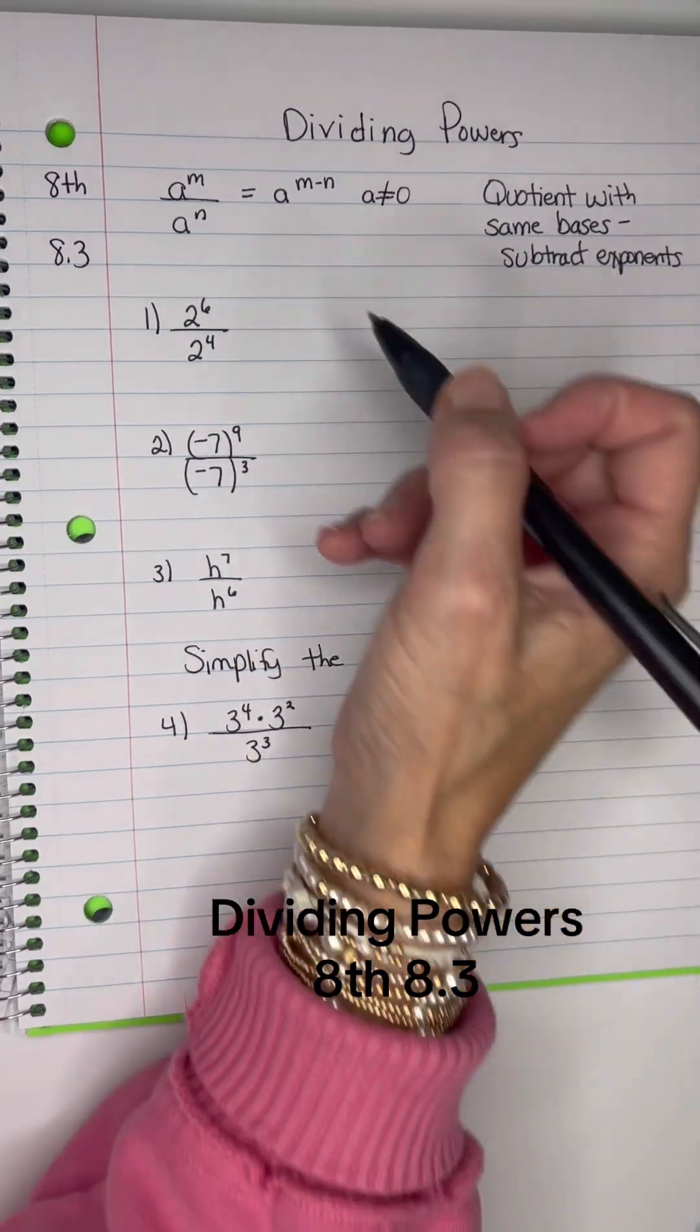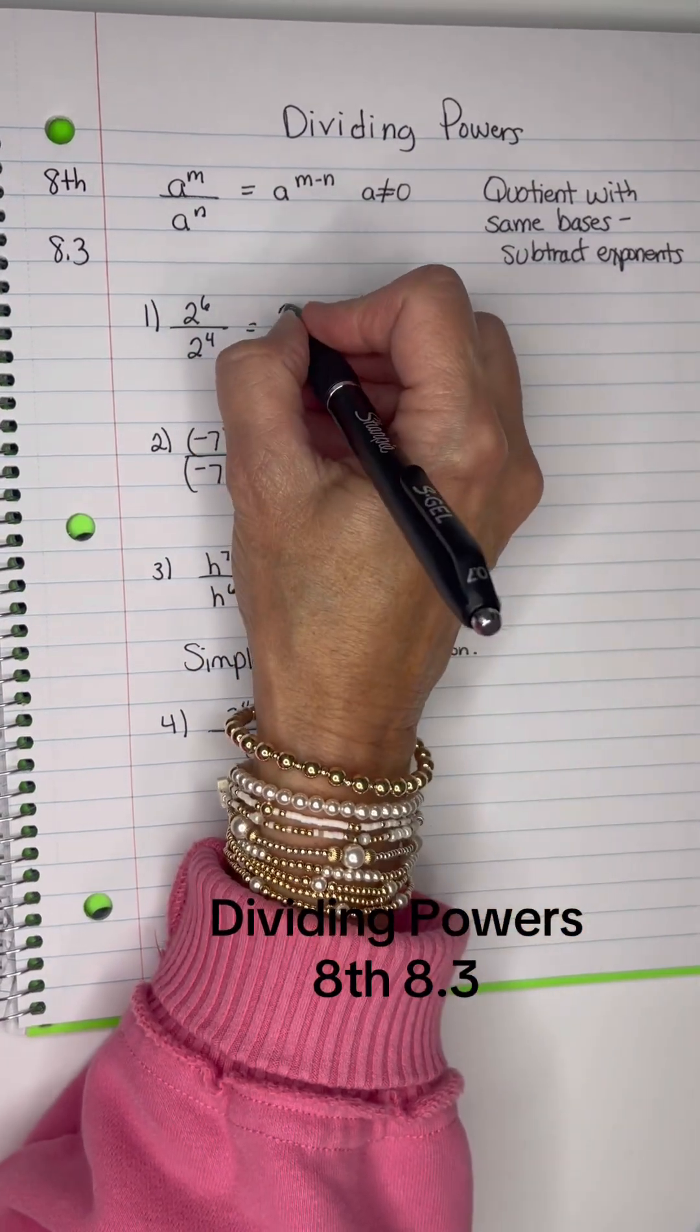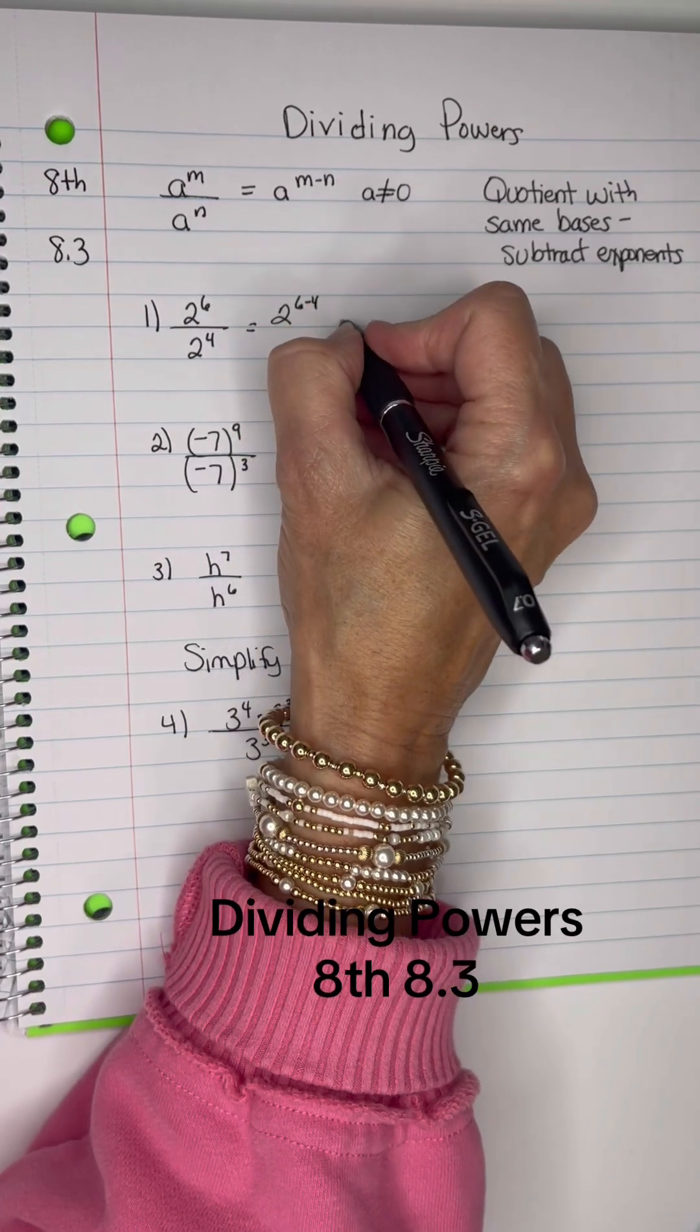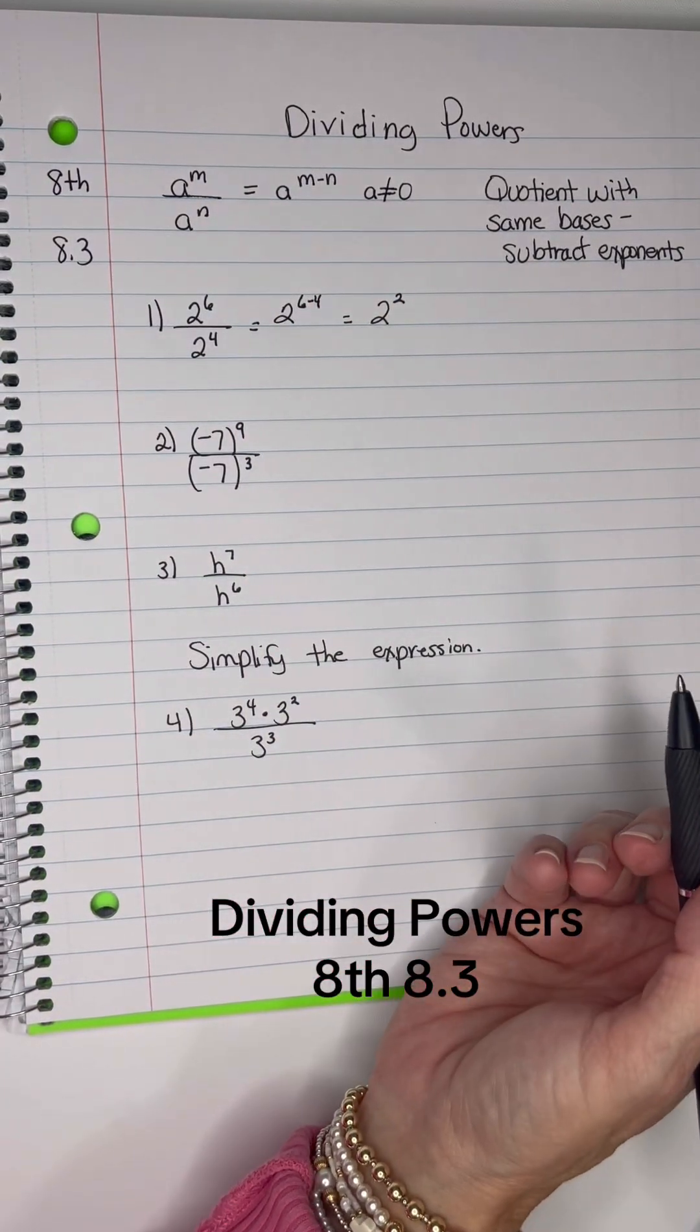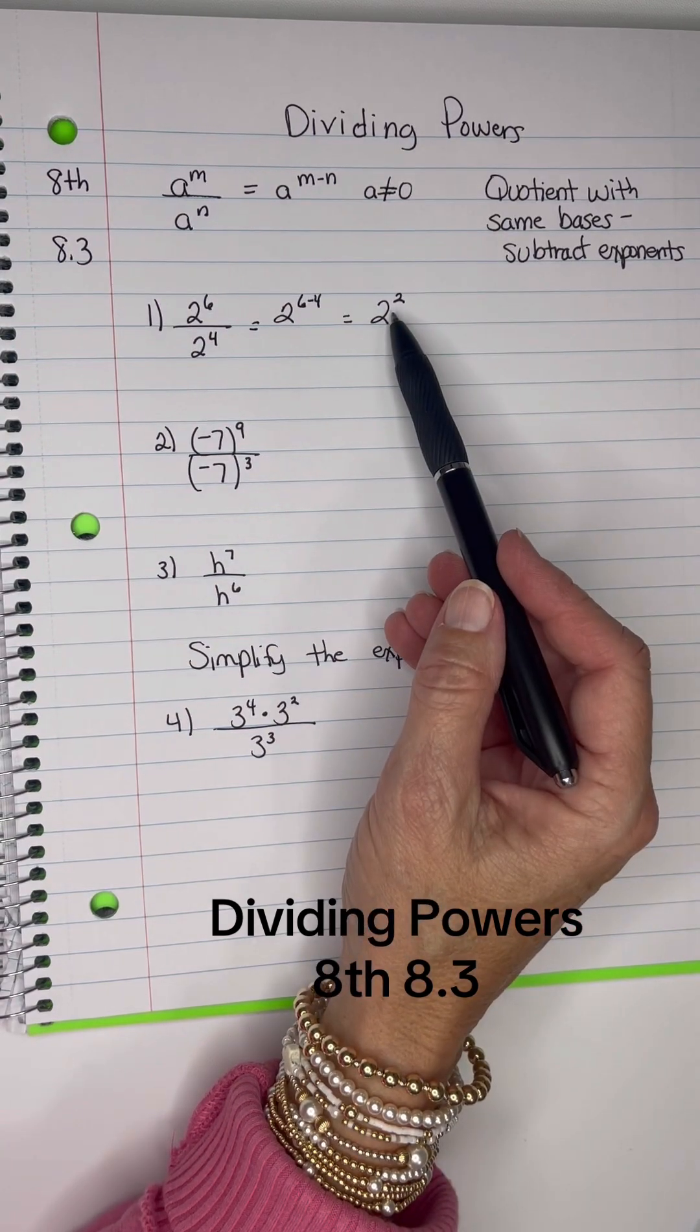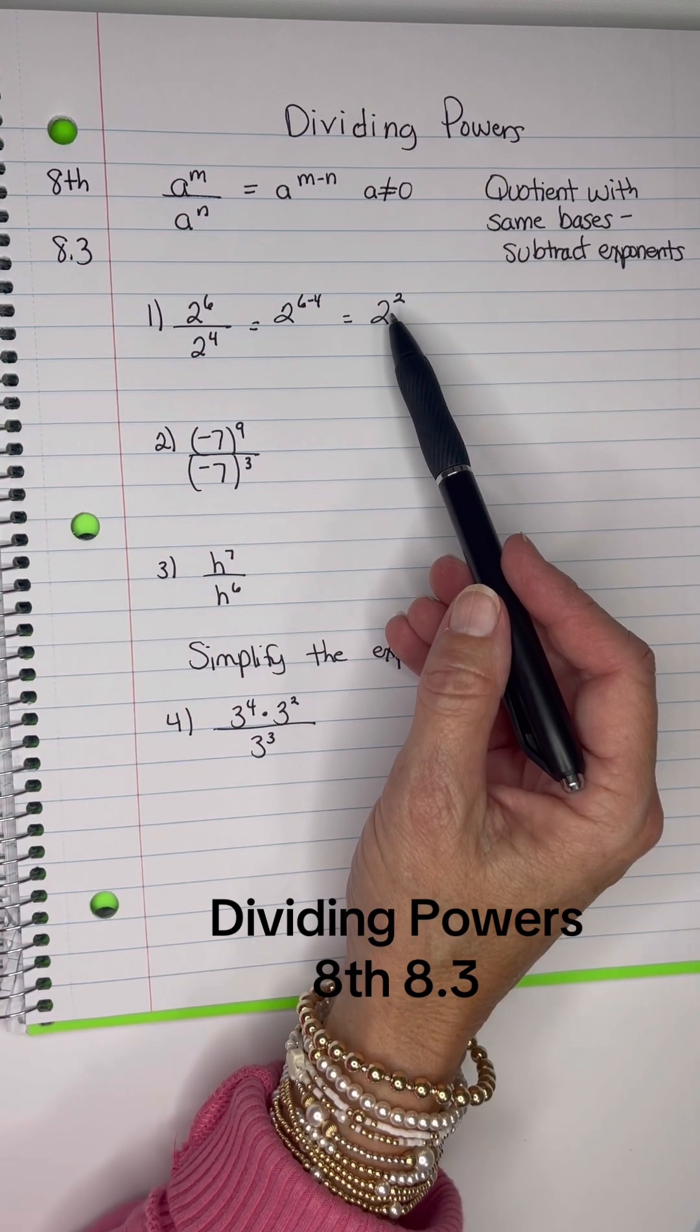Here I have the same bases, so I'm going to take the 2 and write it down, and 6 minus 4 is 2, so I get 2 squared, and that is just simply simplified, but not evaluated. If I evaluated it, it would be 4.